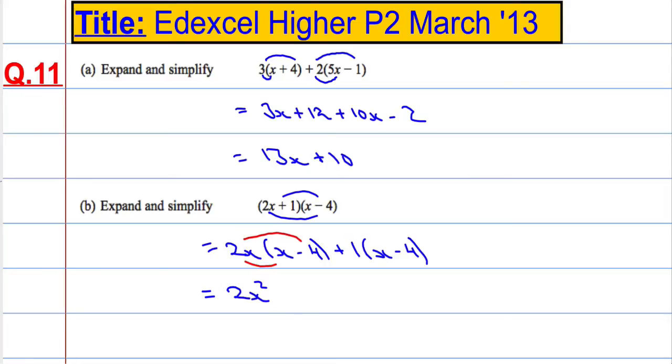Then we do 1 times x and then 1 times negative 4. 1 times x is x, 1 times negative 4 is negative 4. And then the final part is collect your like terms together: 2x squared, negative 8x plus x is negative 7x.